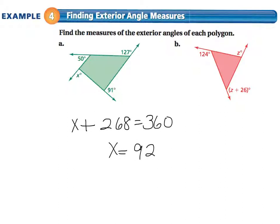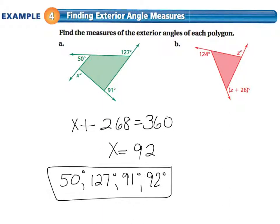The question, though, does not ask for the value of x. The question asks for the measures of the exterior angles. So they would be 50 degrees, 127 degrees, 91 degrees, and 92 degrees. Make sure you are accurate in giving the answer the question wants to know.